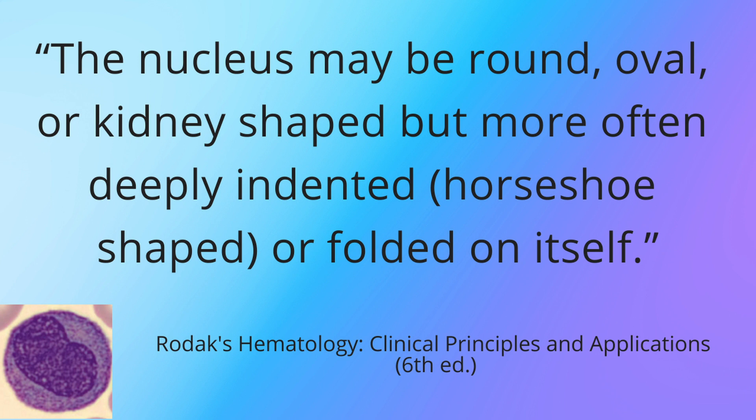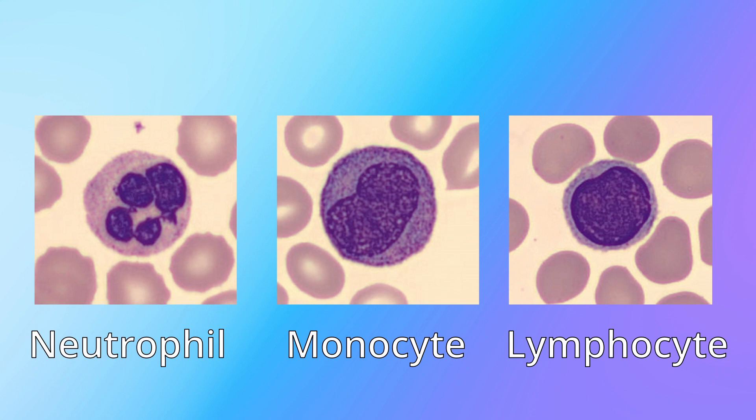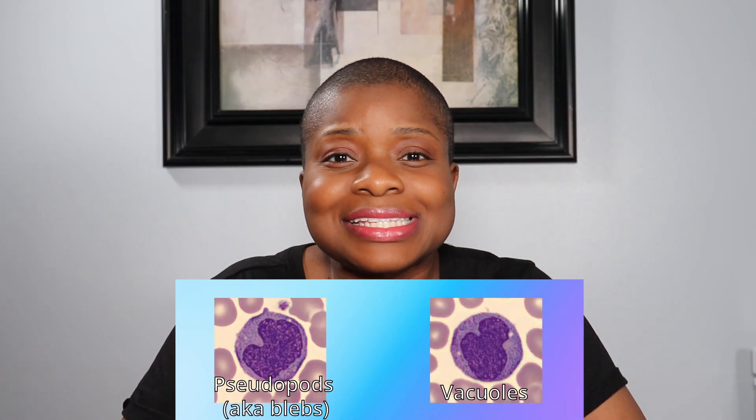On the smear, the monocyte is typically larger than the neutrophil because they tend to get spread out in the slide-making process. As per the 6th edition of Rodak's Hematology Textbook, the nucleus may be round, oval, or kidney-shaped, but more often deeply indented, horseshoe-shaped, or folded on itself. In layperson's terms, the nucleus looks like whatever it wants to. The chromatin in the nucleus will be looser than other WBCs. Nucleoli are generally seen using an electron microscope. The cytoplasm is blue-gray with fine azure granules that give it a ground-glass appearance. Cytoplasmic pseudopods may be visible, and cytoplasmic and nuclear vacuoles may also be present.